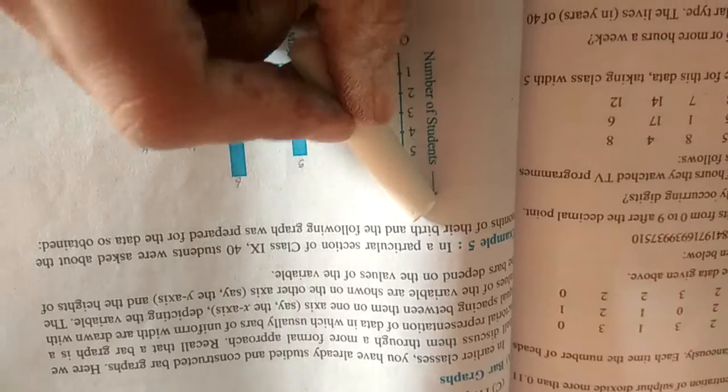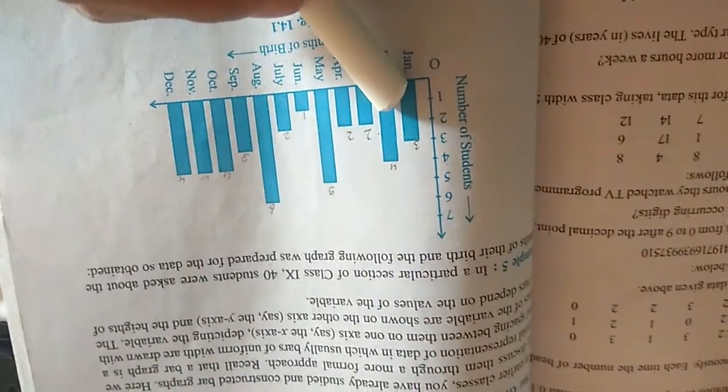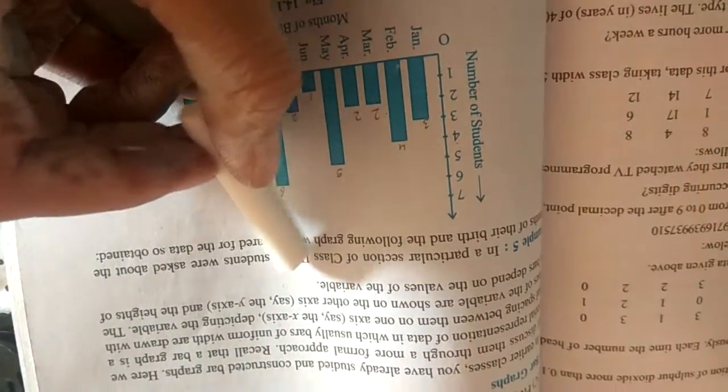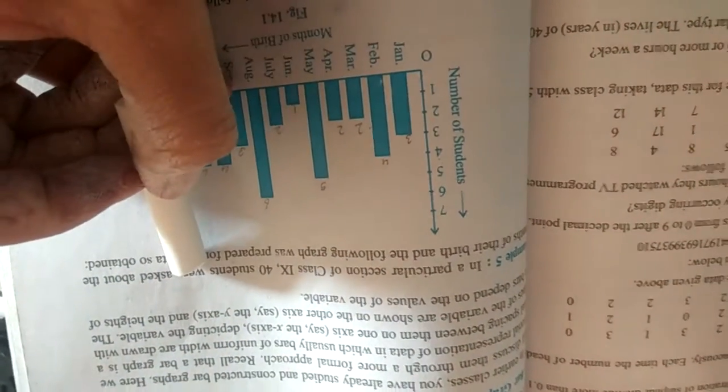Now what you have to see is total how many students are there. In a particular section, 40 students were asked about their months of birthday and the graph is plotted. So students, the total number of students on which the survey was done are 40.